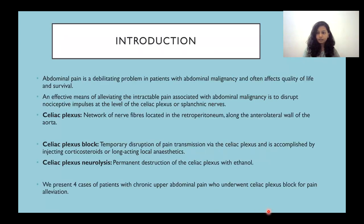Introduction: abdominal pain is a debilitating problem in patients with abdominal malignancy and often affects quality of life and survival. An effective means of alleviating the intractable pain associated with abdominal malignancy is to disrupt nociceptive impulses at the level of the celiac plexus or the splanchnic nerves. The celiac plexus is a network of nerve fibers located in the retroperitoneum along the anterolateral wall of the aorta.